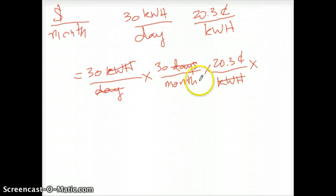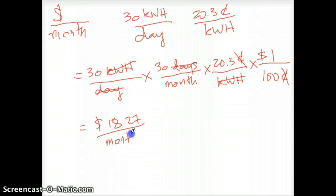The only thing that remains now is cent over month, but we want dollar over month. So we want a relationship between dollar and cent, where the cent is at the bottom, because I want to cancel that. And I want dollar at the top. Now, of course, we know that every one dollar is 100 cents. So that allows me to cancel out that as well. So if you see, what happens at the end is I'm left with dollar over month, which is exactly what I'm looking for. So then what you need to do is just kind of do the calculation on your calculator, which is 30 times 30 times 20.3 divided by 100.